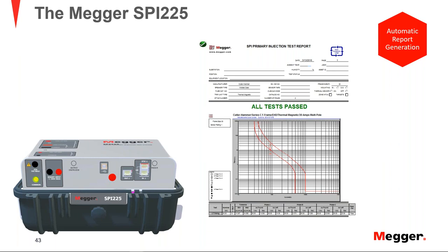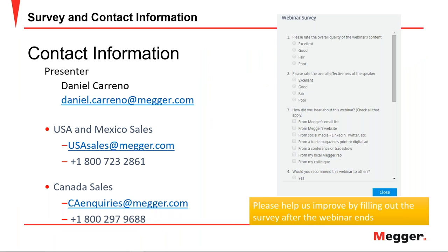With that, Daniel hands back to Michael to go over the Q&A round. The presentation portion of the webinar is now concluded. A certificate of attendance, copy of the presentation, and a link to the video recording will be emailed to everyone in about two business days. You can also view recordings of previous webinars and register for upcoming webinars at us.megger.com/webinars, including the next webinar on January 15th titled Fundamentals of Transformer Commissioning and Maintenance Testing.